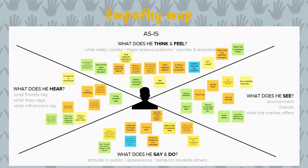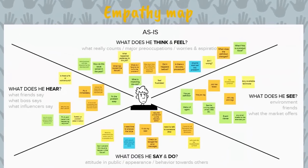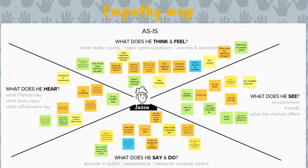Here's an example of an empathy map for the as-is scenario, which we used during a project for a cognitive scheduling troubleshooting console.